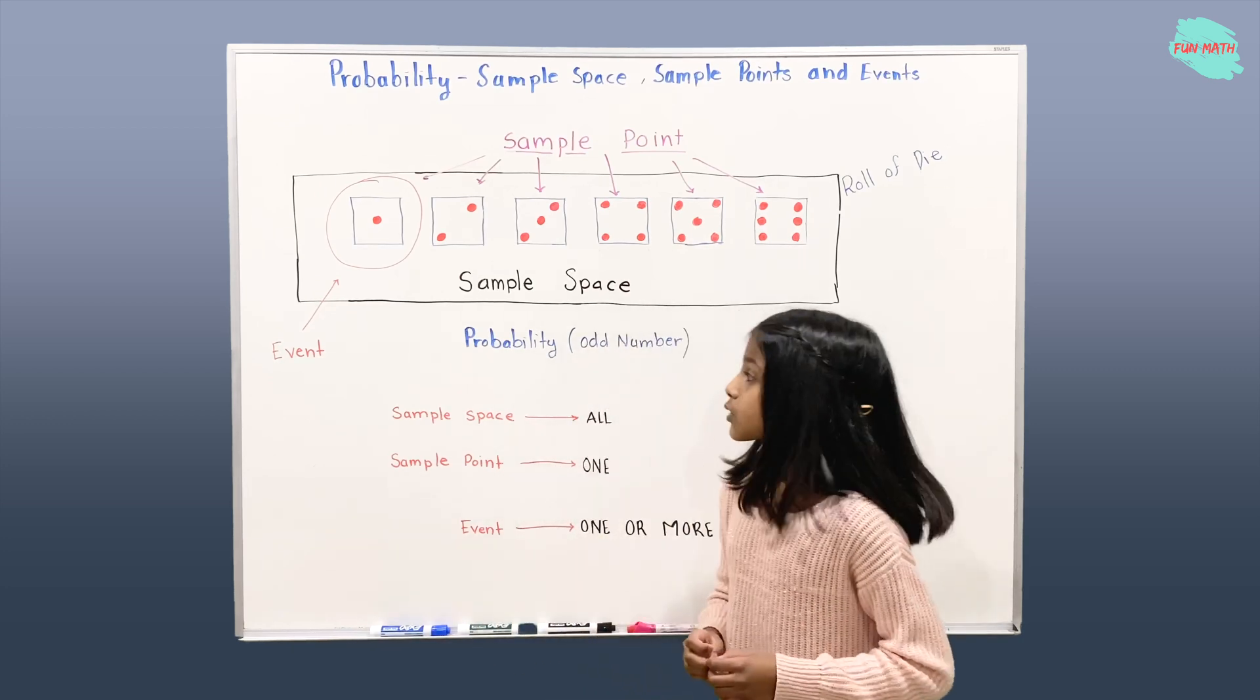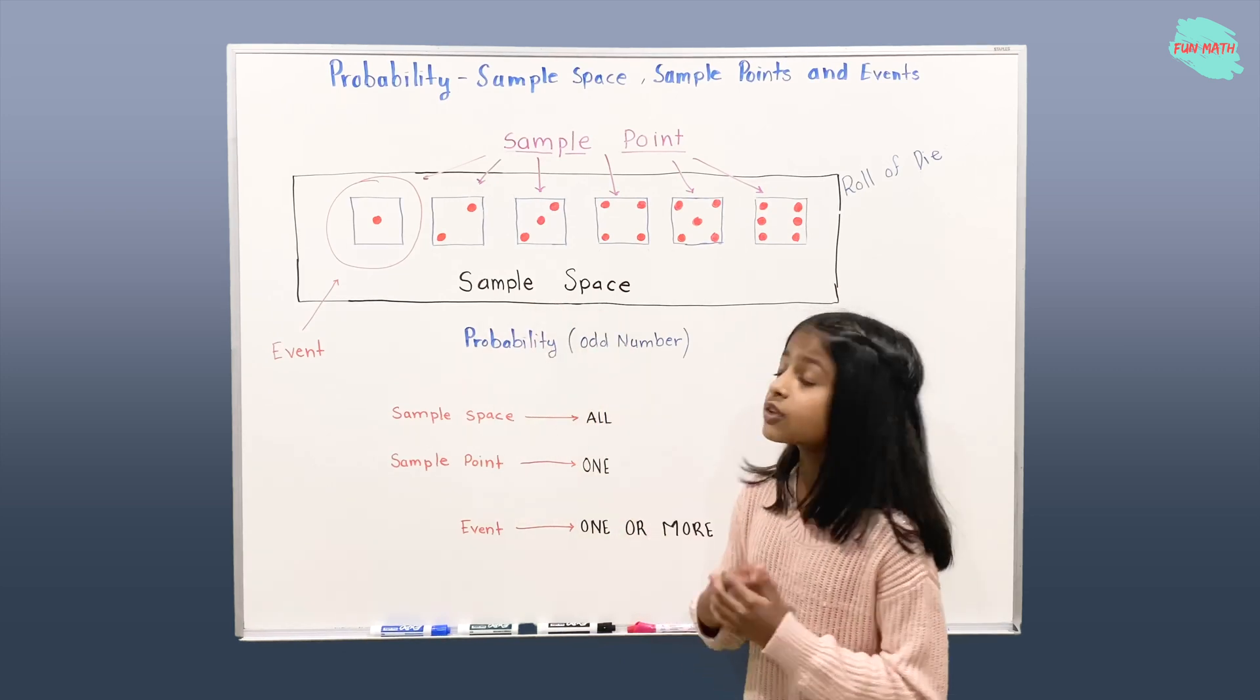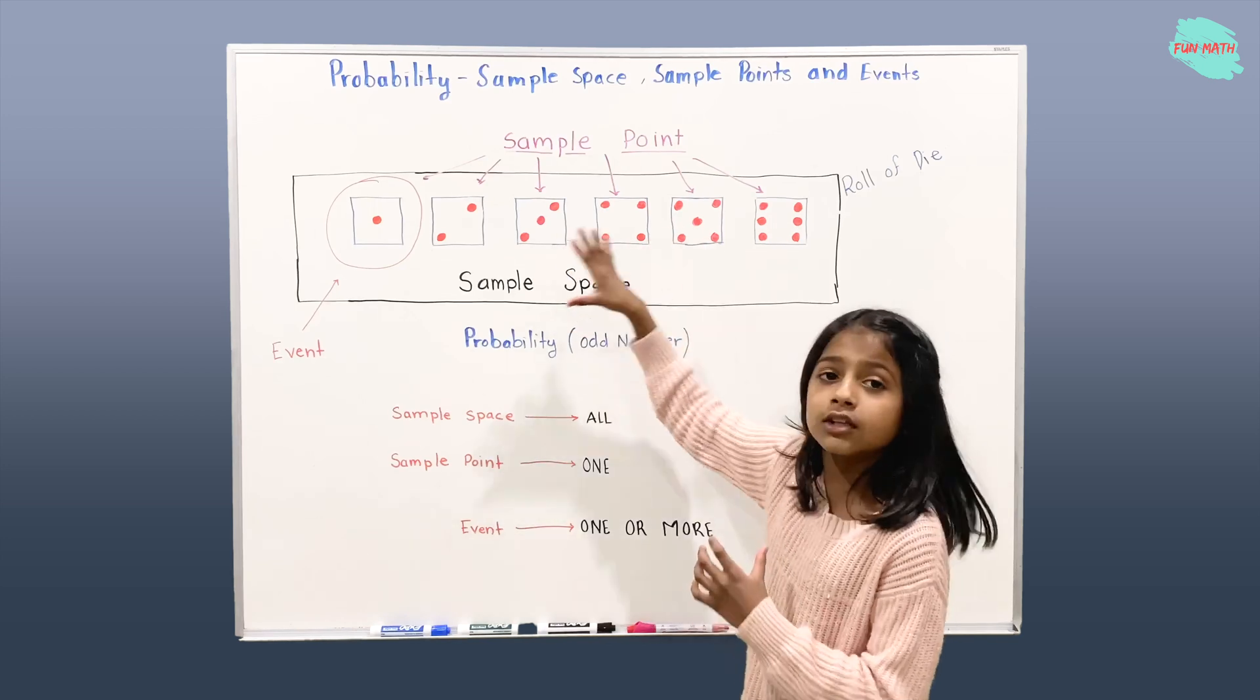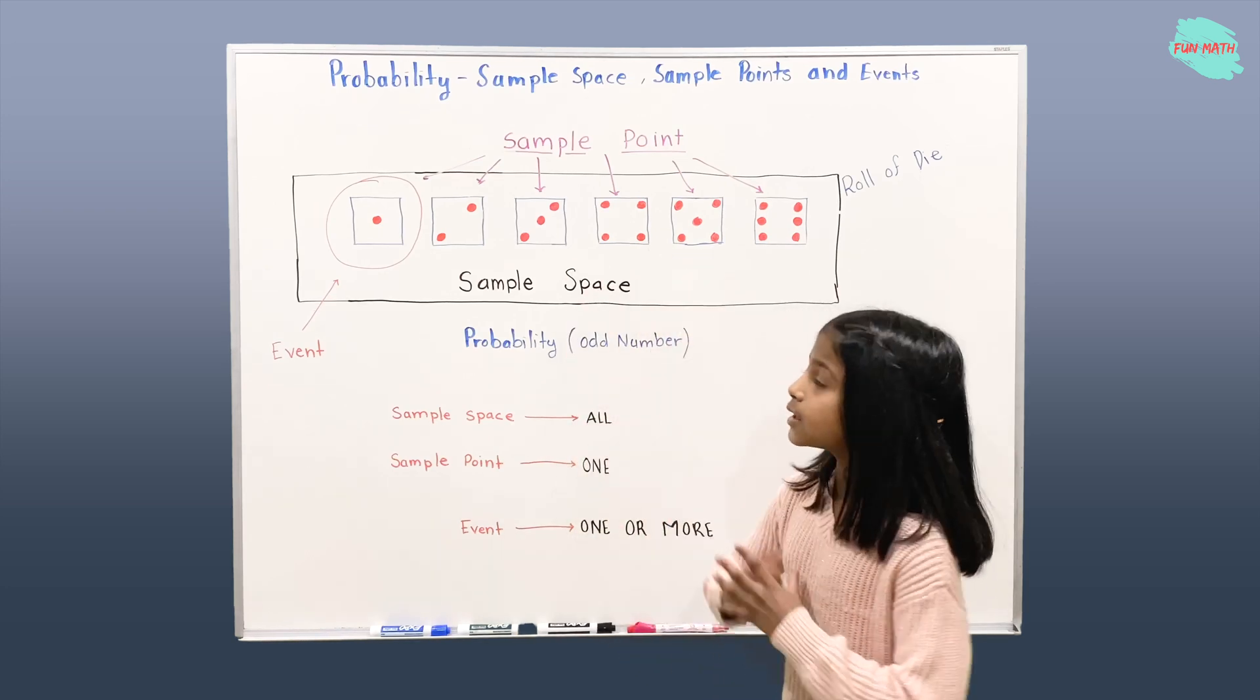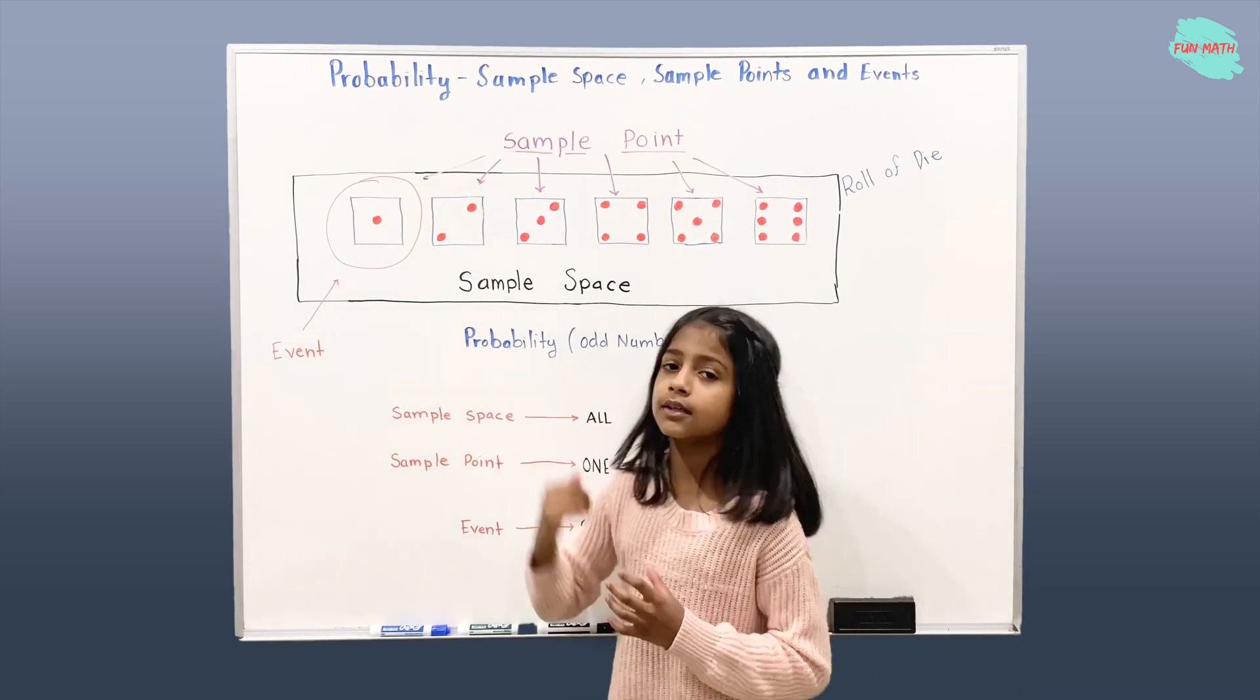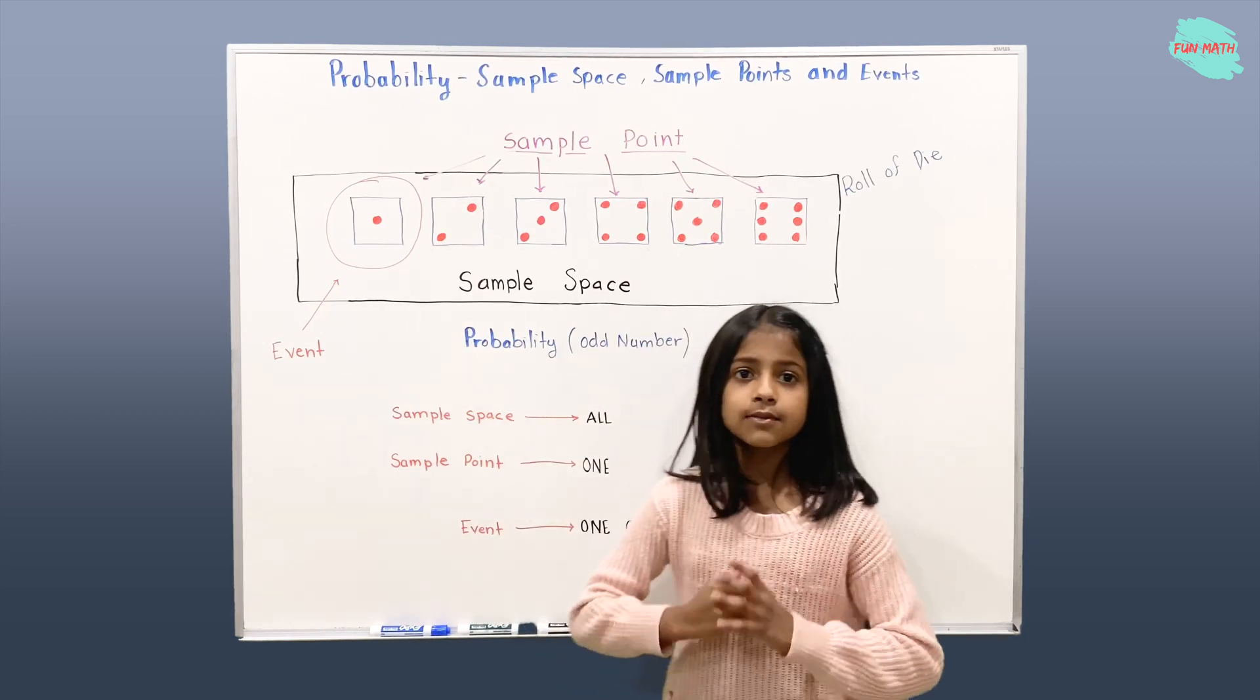So we talked about the sample space. So sample space is all of the possibilities. And sample point is one of the outcomes. Like one, for example. Or one through six.